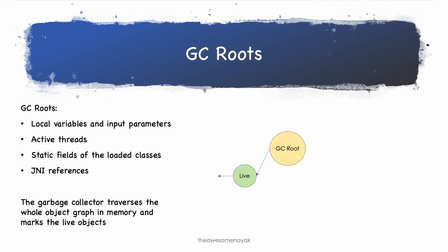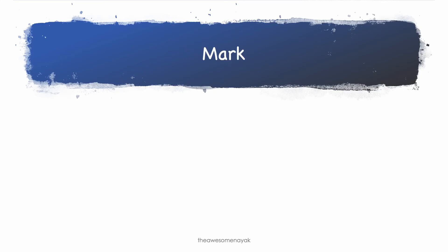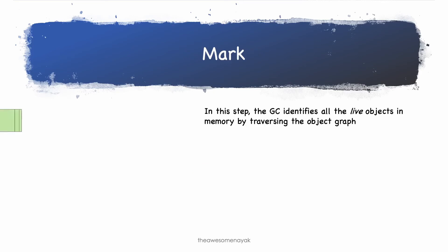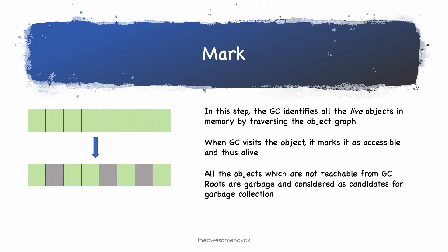The garbage collector traverses the whole object graph in memory, starting from those GC roots and following the references from the roots to other objects. When GC visits an object, it marks it as live. All the objects which are not reachable from the GC roots are garbage and considered as dead. The first phase in garbage collection is the mark phase. In this phase, the GC identifies all the live objects in memory, starting with the GC roots and traversing the entire object graph. All the objects which are not reachable from any of the GC roots are considered dead objects or garbage — these are candidates for garbage collection.